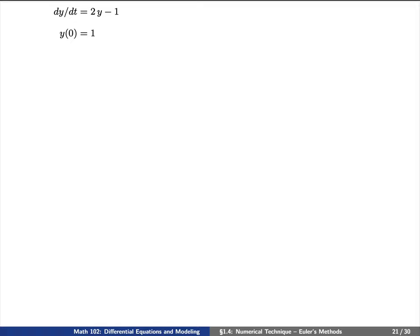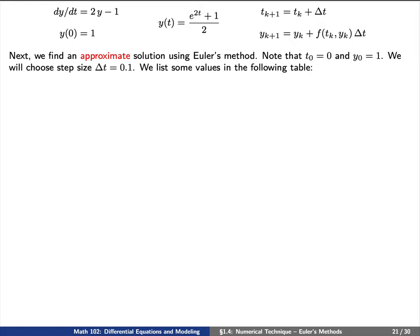So let's recap. We have our initial value problem and we know the exact solution for our initial value problem. Next, let's try to find an approximate solution using Euler's method.